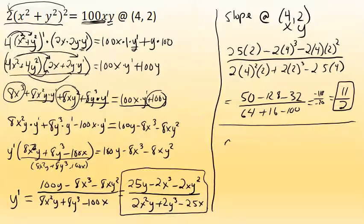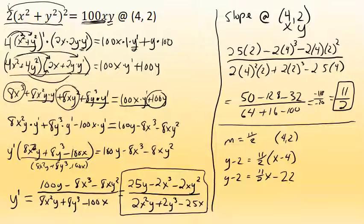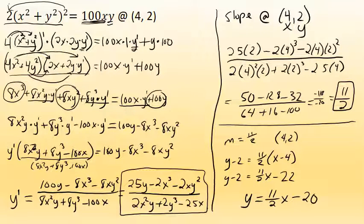Using the slope of the tangent line, which is 11/2, and the point on the tangent line (4, 2), we can write the equation: y − 2 = (11/2)(x − 4). Expanding: y − 2 = (11/2)x − 44/2, which simplifies to (11/2)x − 22. Adding 2 to both sides gives the final answer: y = (11/2)x − 20.